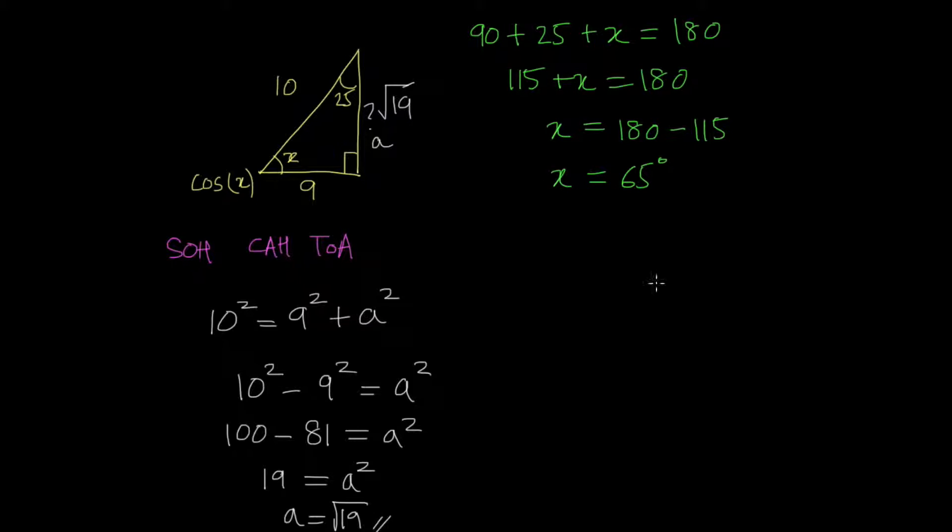So x is 65. We can put that, and we can check that 65 plus 25 is 90, and 90 is 180. So this is our value for x.